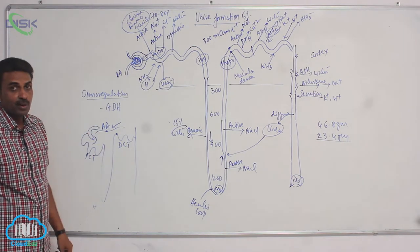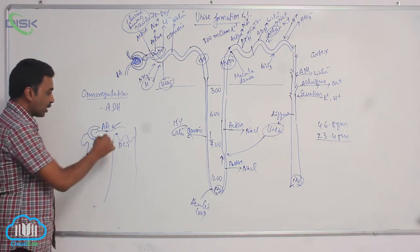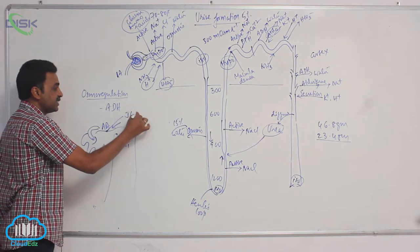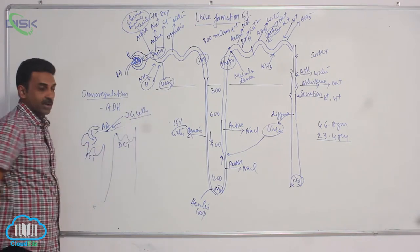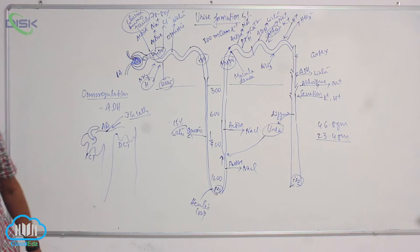Inside efferent arteriole, there are juxtaglomerular cells, JG cells. They are called juxtaglomerular cells.